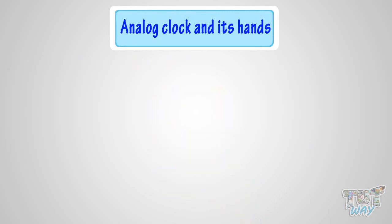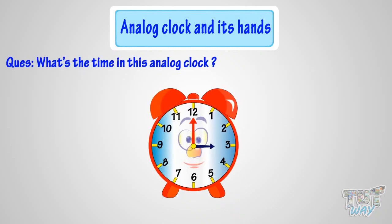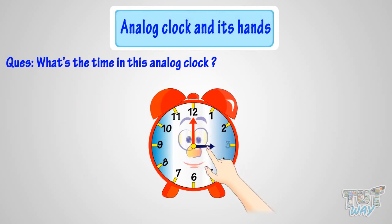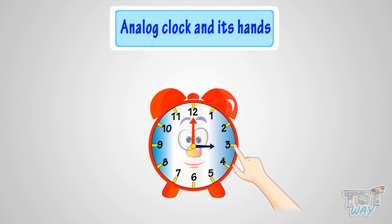Here we have another example. Can you tell me what's the time in this analog clock? No numbers are written here. So kids, you must be knowing the places of various numbers on the clock. This is the place of number 12, so the minute hand is pointing at number 12, so it's time to the hour. But to which hour? The hour hand tells the hour, and this place is of number 3, where the hour hand is pointing. So it's 3 o'clock.